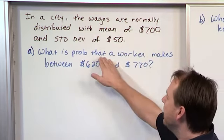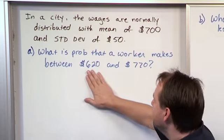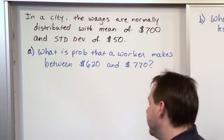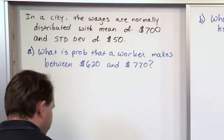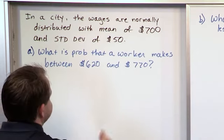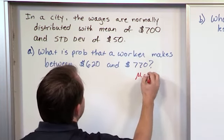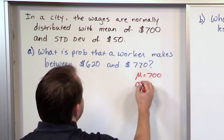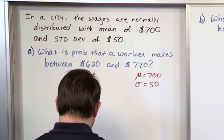Then we want to know what is the probability that a worker makes between $620 and $770. So we know we're going to have to write down what we know. So the mean is $700. The standard deviation is $50.